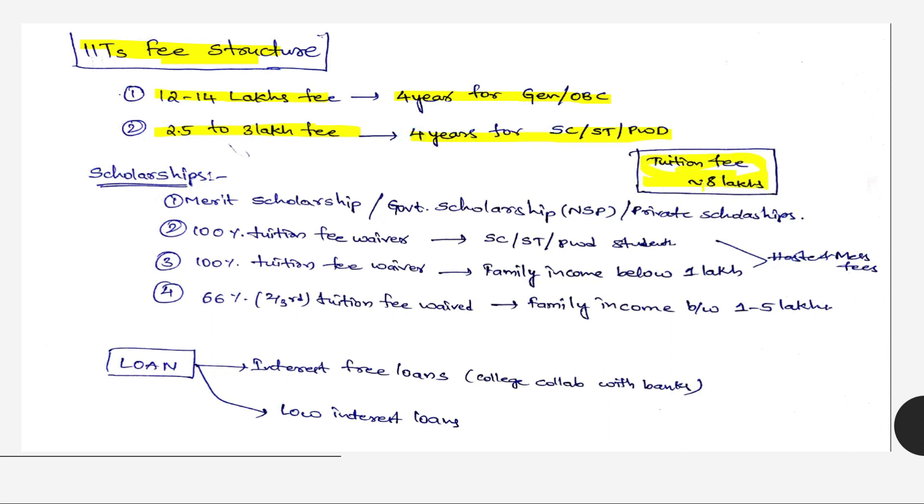Coming to scholarships - merit scholarships, government scholarships like NSP, and some private scholarships you can apply from the institute. 100% tuition fee waiver for SC, ST, and PWD students. 100% tuition fee waiver for family income below 1 lakh.